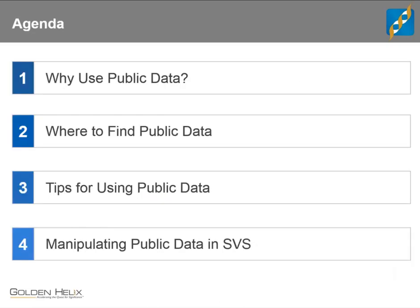Our agenda today is something like this: we'll start out by talking about a few of the reasons why you might want to use public data as part of an analysis. We'll talk about where to find public data and review three or four different sources with some depth. I'll give you a few tips for using public data based on my own experience, and then we'll talk about how you can manipulate and work with public data using the Golden Helix SVS software package.